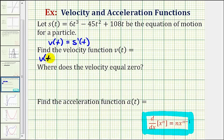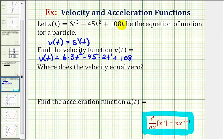So v of t is going to be equal to six times the derivative of t to the third, which is three t squared, minus 45 times the derivative of t squared, which is two t to the first, plus 108 times the derivative of t, which is equal to one. This means our velocity function v of t is equal to 18t squared minus 90t plus 108.